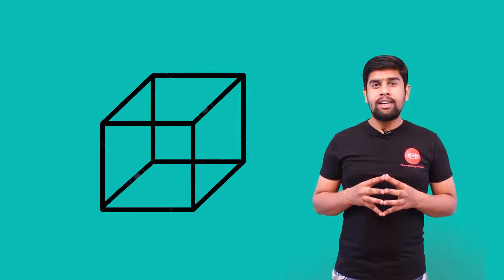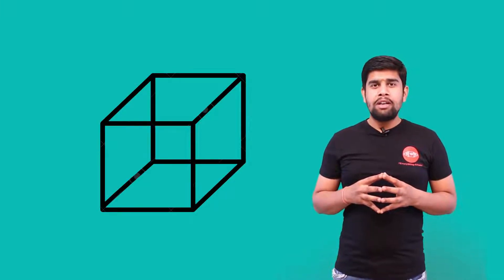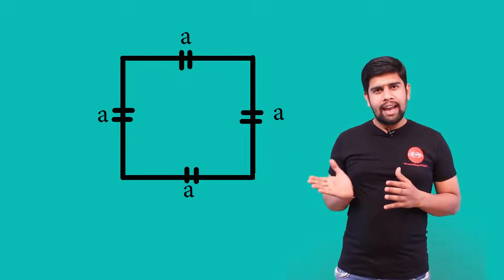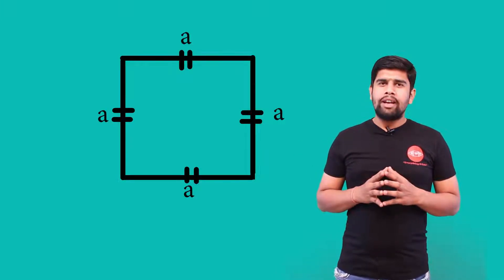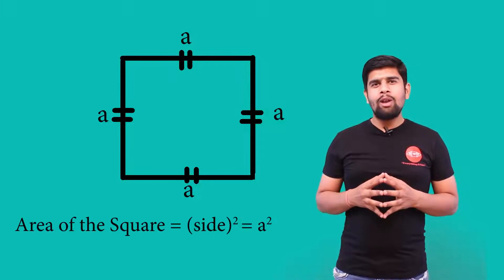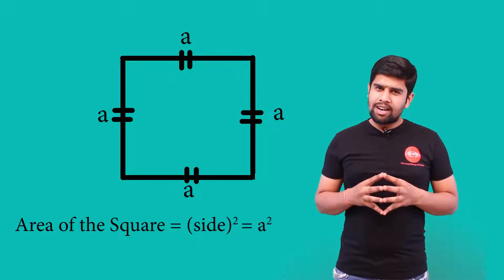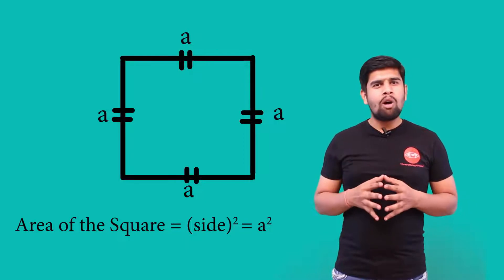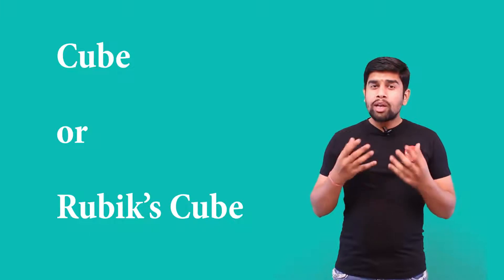Hello my dear friends, let us discuss the cube, which is a solid figure. First, consider a square of side a. The area of this square is a squared.